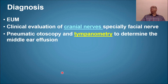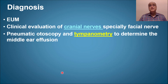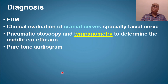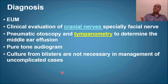Pneumatic otoscopy and tympanometry help determine middle ear effusion; if fluid is present, the tympanic membrane will not be mobile on pneumatic otoscopy, and tympanometry will show a type B tympanogram. Pure tone audiogram should be performed to identify the type and severity of hearing loss — whether conductive or sensorineural — and to monitor improvement after treatment.